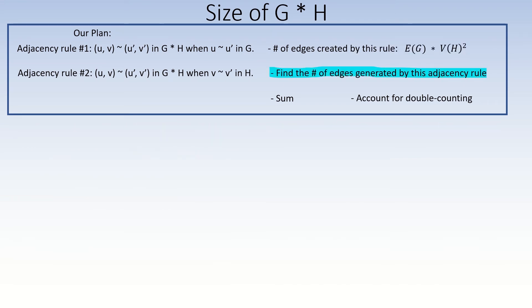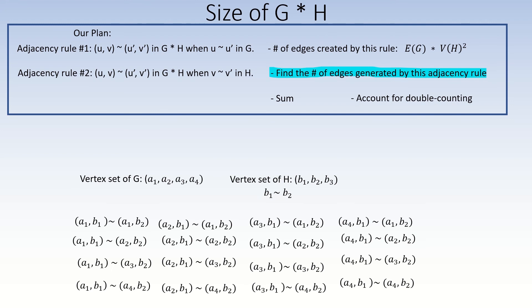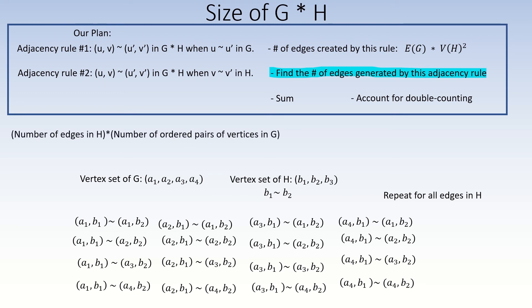We can apply the same method for the second adjacency condition. This time we fix the right entries to be an adjacent pair of vertices in graph H, vary the left entries over all possible ordered pairs of vertices in graph G, and repeat for all edges in graph H. To count these pairs, we multiply the number of edges in H by the number of possible ordered pairs of vertices in G, giving us e(H) times v(G)².